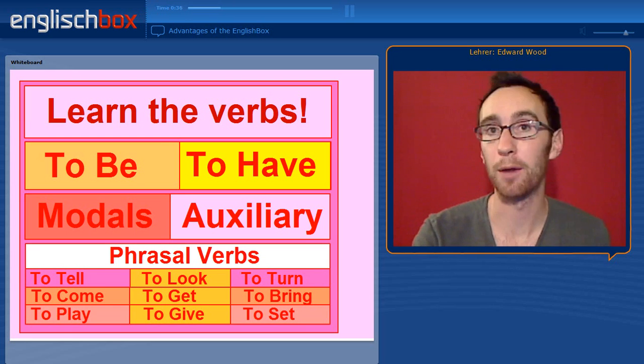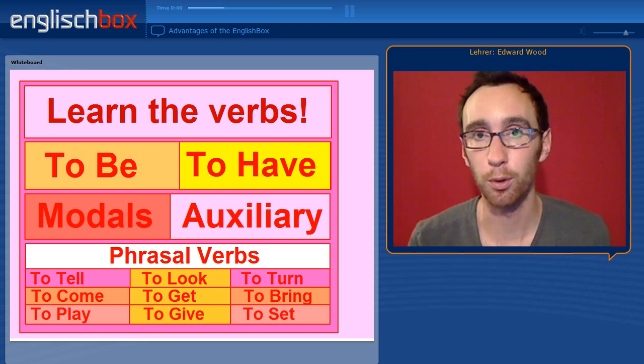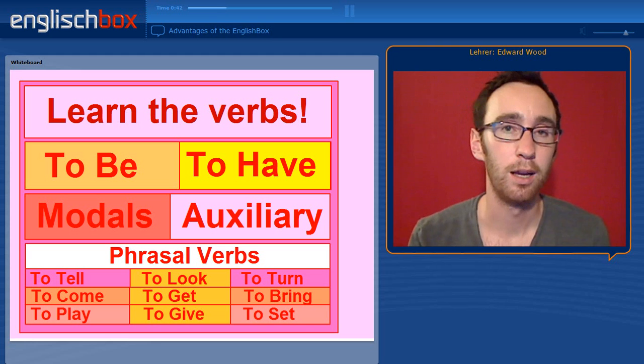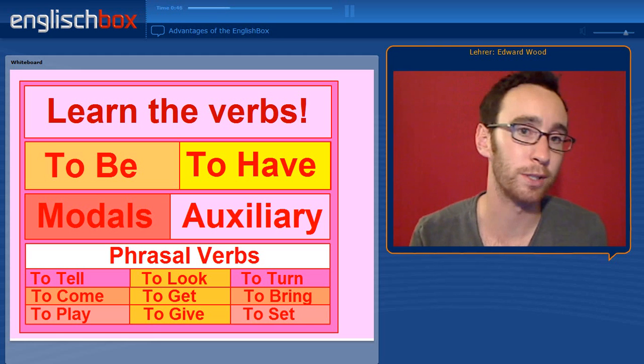You could also learn about the verbs. We have basic verbs, like the verb to be or the verb to have. We have more complicated verbs, modal verbs and auxiliary verbs.